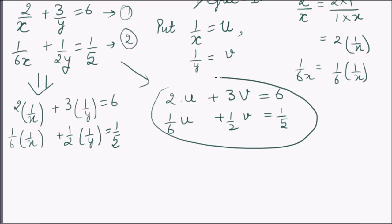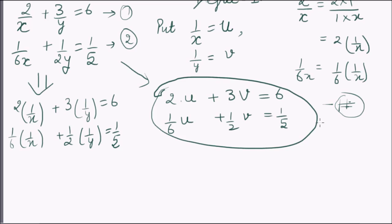Clearly we have attained our motive — we have converted the given pair into a linear pair equation. This pair can be solved by any method: graphical, substitution, elimination, or cross-multiplication method. Say the solution is (a, b) after solving the given pair.